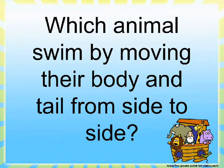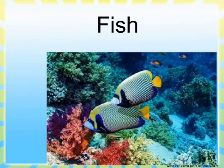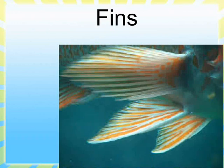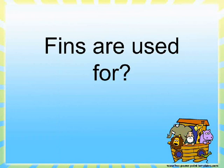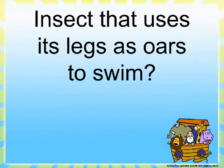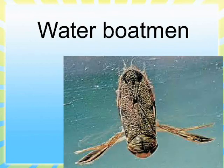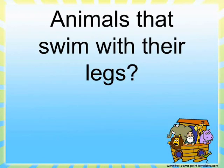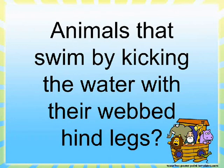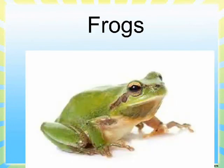Which animal swims by moving its body and tail from side to side? Fish. What do fish have? Fins. Fins are used for balancing, changing direction, and stopping. Which insect uses its legs as oars to swim? Water boatmen. Animals that swim with their legs — prawns and tadpoles. Animals that swim by kicking the water with their webbed legs — frogs.